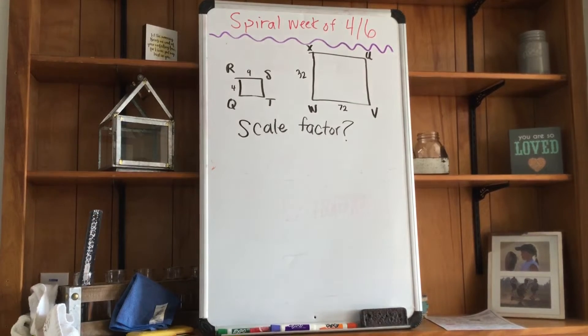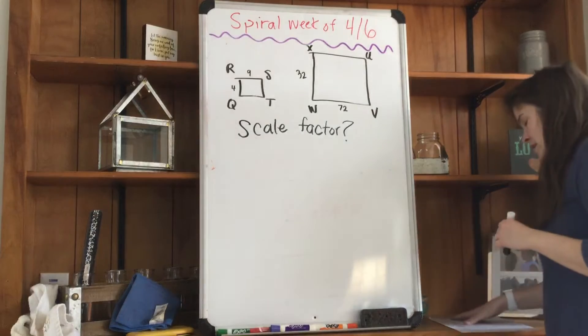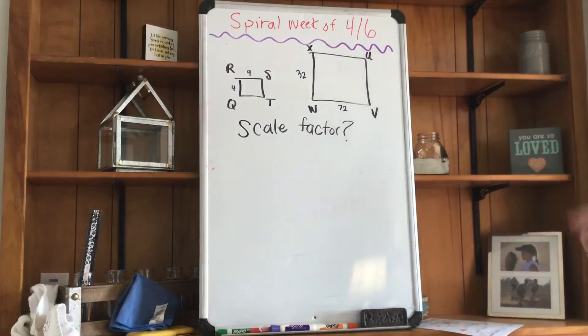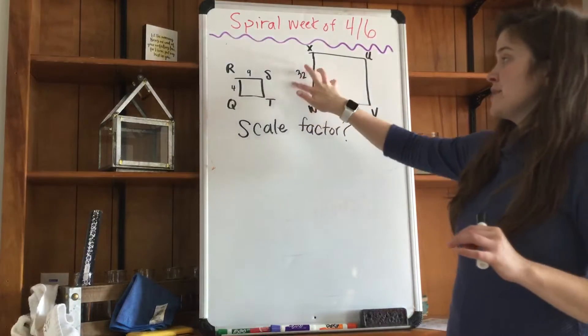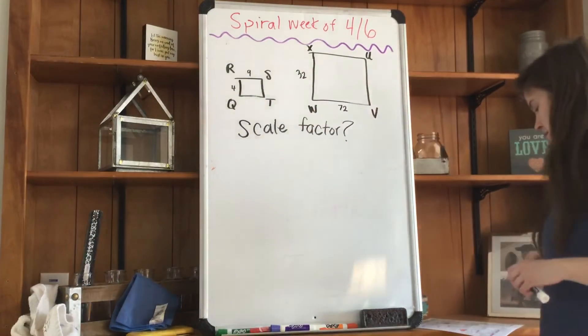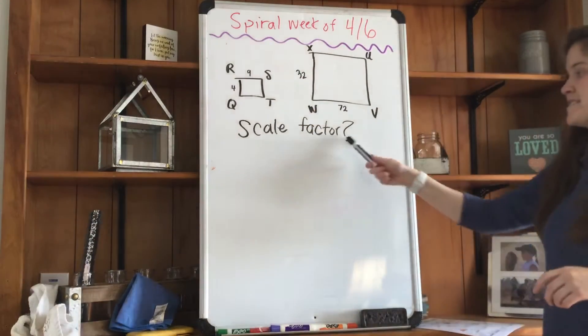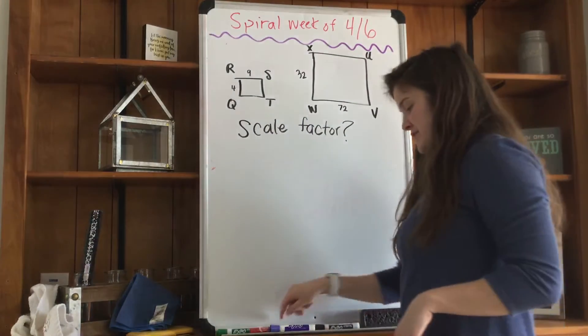Here is Monday number three, the third one down in the Monday column. The question states that these rectangles are similar, even though my picture might be a little off. What is the scale factor? We have to solve for the scale factor.